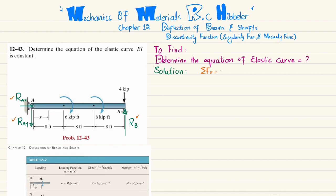We find R_AX, R_AY, and R_B using equations of equilibrium. The first equation is: the sum of all forces along the x-direction must be equal to zero. Taking this direction as positive, the only horizontal force is R_AX, so R_AX equals zero — the horizontal reaction force is zero.